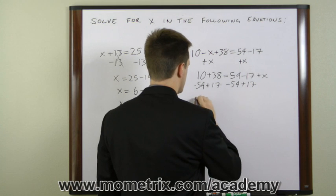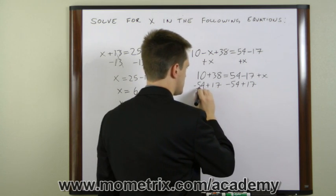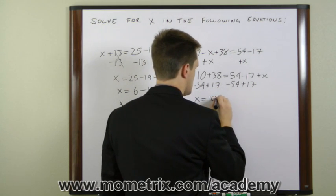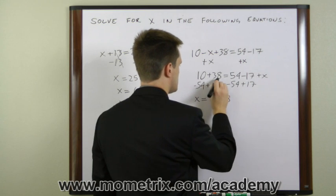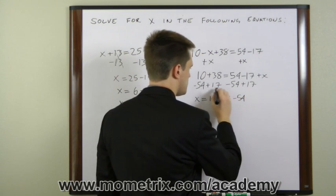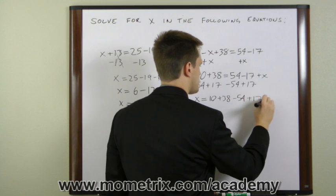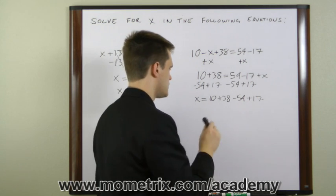So what we have now is x equals 10 plus 38 minus 54 plus 17. And so once again, we'll just do these one at a time.